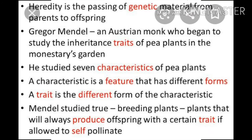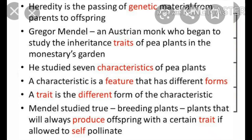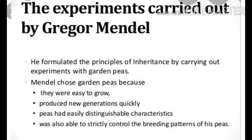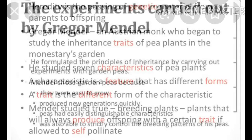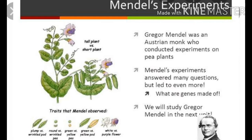Mendel's work remained unnoticed for about 34 years. He was greatly disappointed, his health was deteriorating, and on 6th January 1884, he passed away. He had conducted a hybridization experiment on the garden pea, Pisum sativum, for seven years and proposed the laws of inheritance in living organisms.